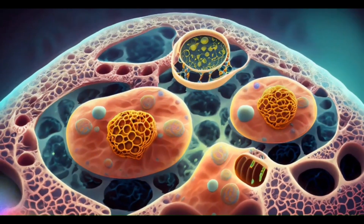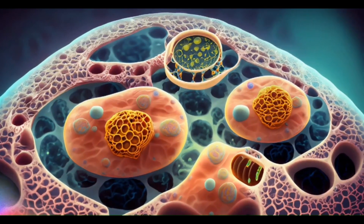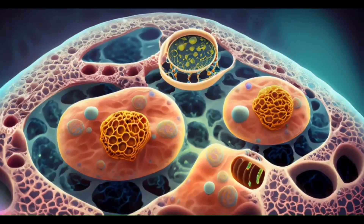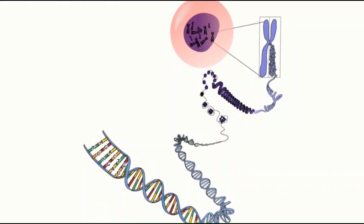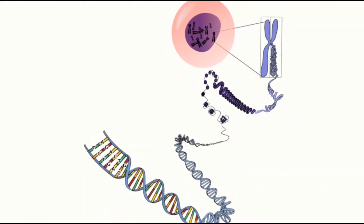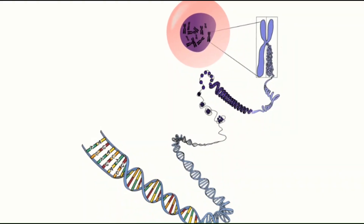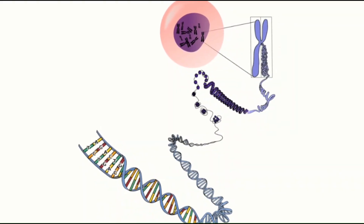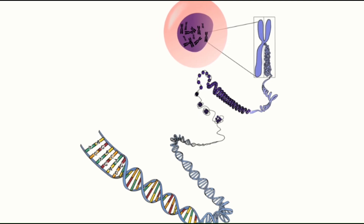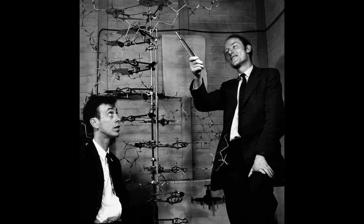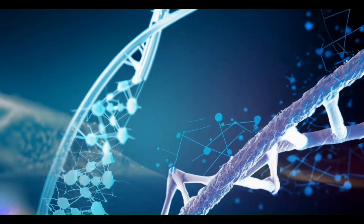Deoxyribonucleic acid, or known as DNA, is the molecule that carries genetic information for the development and functioning of an organism. DNA is made of two linked strands that wind around each other to resemble a twisted ladder, a shape known as a double helix explained by Watson and Crick.